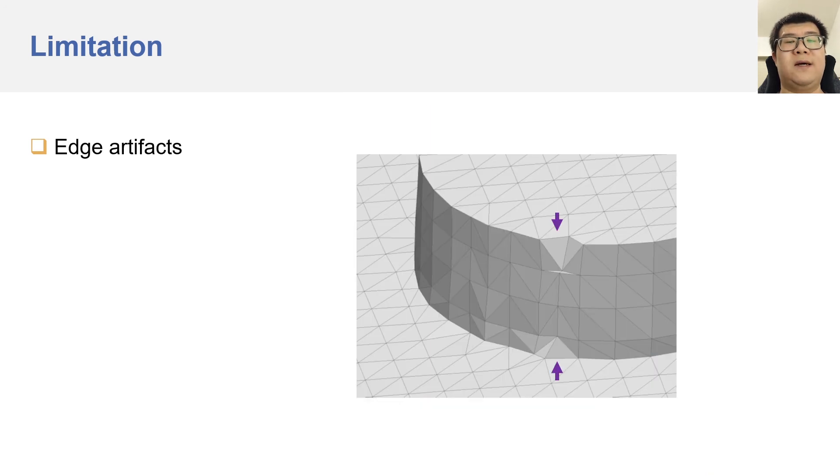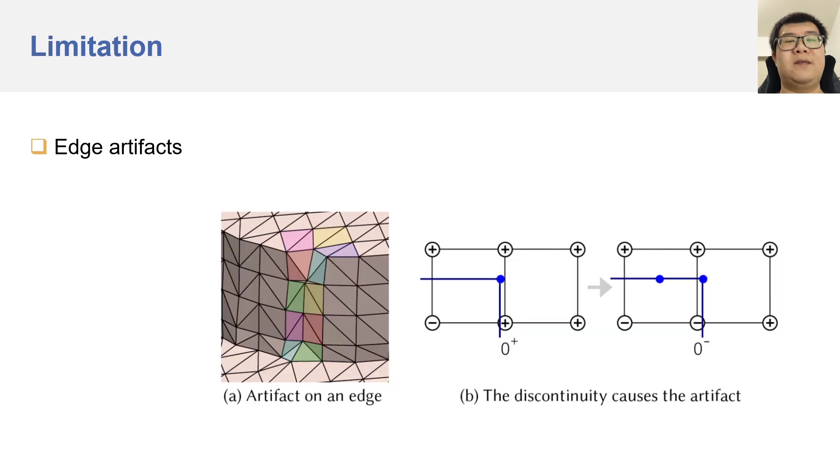Another issue of our method is the edge artifacts. They cannot be easily fixed because they are caused by the inherent properties of neural networks. Neural networks map continuous inputs into continuous output values. However, consider when the signed distance of a vertex moves from zero positive to zero negative. The input changes in a continuous way, but the position of this output vertex has to change in a discrete way. And this contradicts the properties of neural networks.